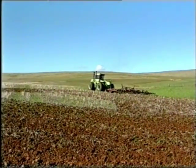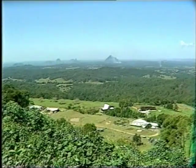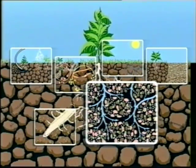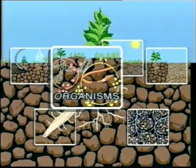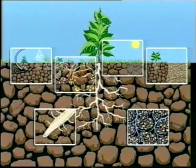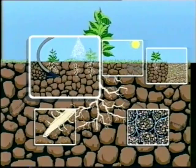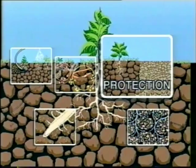This can be achieved by understanding soil ecosystem relationships. The six vital parts of this ecosystem are: the mineral parts of the soil — sand, silt and clay; the water in the soil; soil organisms such as worms, insects, fungi and bacteria; nutrients that are needed for plant growth; weed control in agriculture; and soil protection through ground cover.